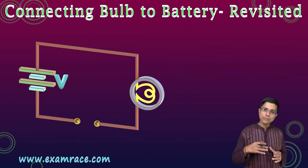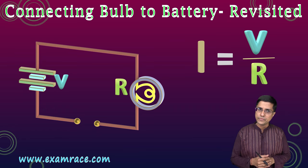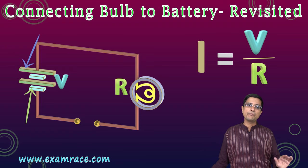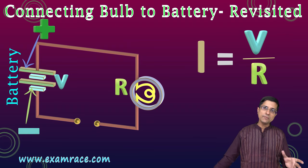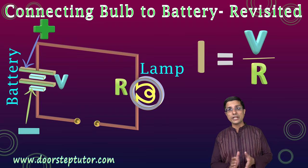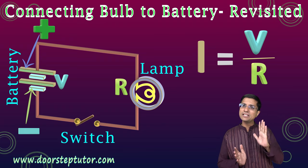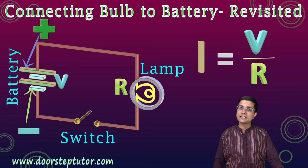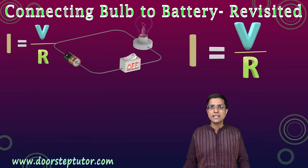Moving on to circuit diagrams: when drawing diagrams on paper, we replace the battery with parallel lines — one small and one large — and this is the standard symbol. The bulb is represented by curly lines enclosed inside a circle. A switch is represented by a bar across two terminals — if the bar touches both terminals, the switch is closed and current can flow; if it touches only one terminal, the switch is open and current does not flow.